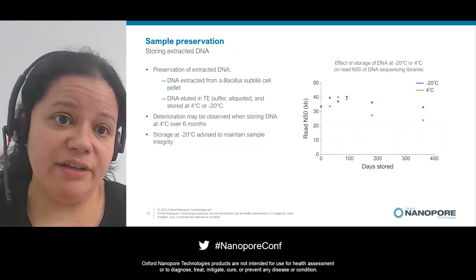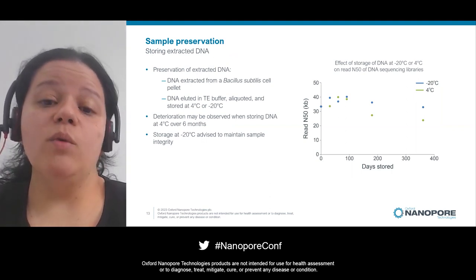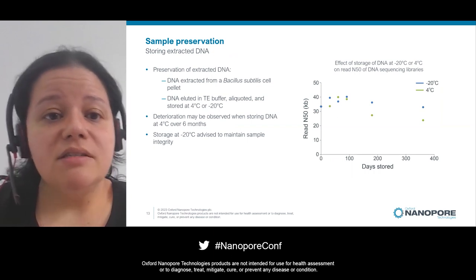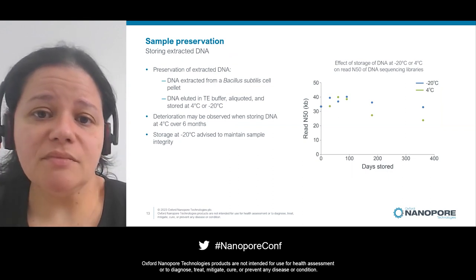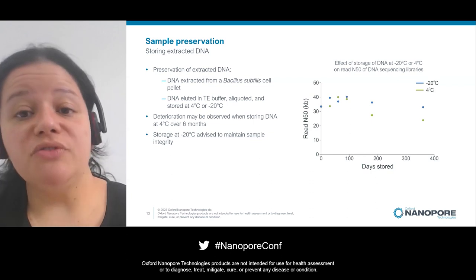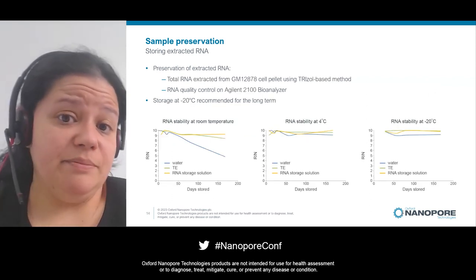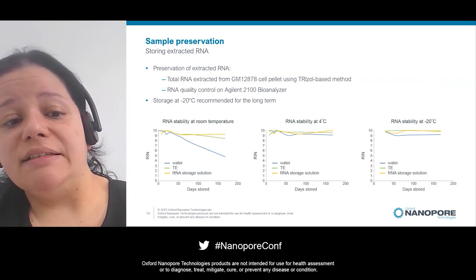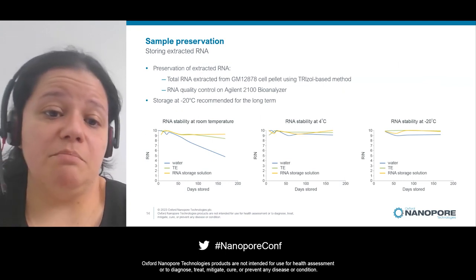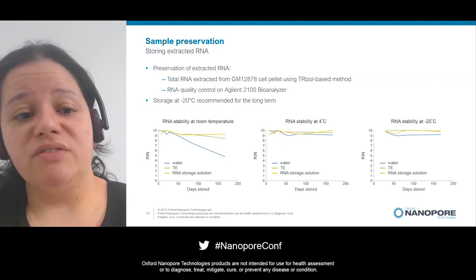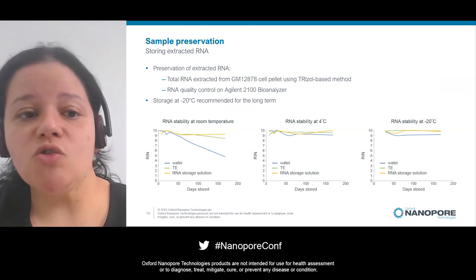When you actually do your extraction, you also need to preserve the extracted material. For DNA, 4°C (the fridge) is fine for short-term storage, but for long-term storage it's much better to freeze the sample to retain most of the long fragments. We've seen similar results for RNA — samples kept in water show the RIN (RNA integrity number) suffers a bit over the long term, so we also recommend storing RNA in the freezer.